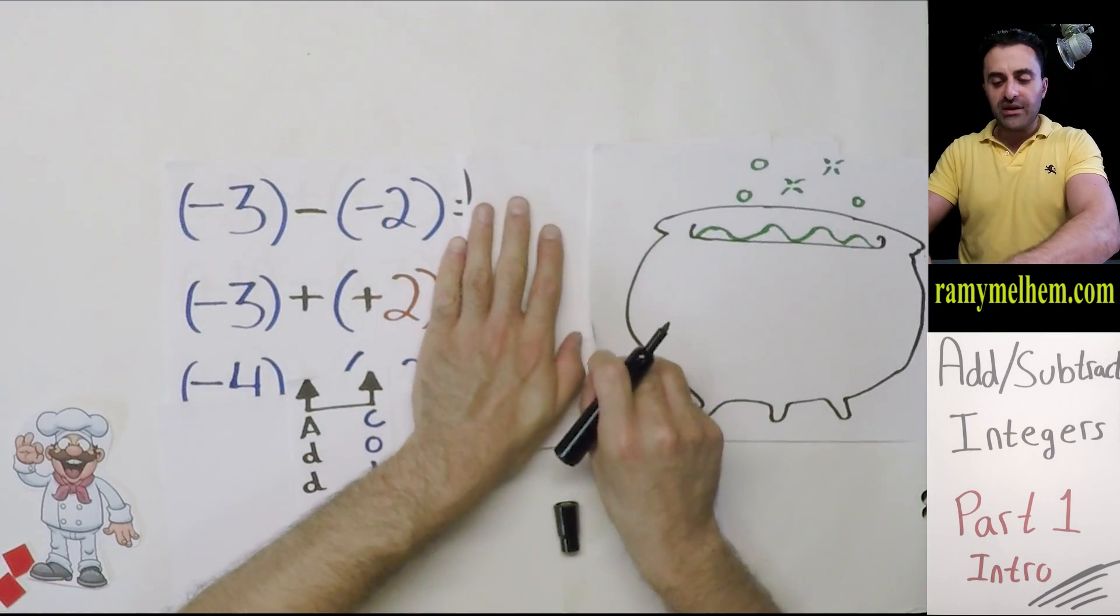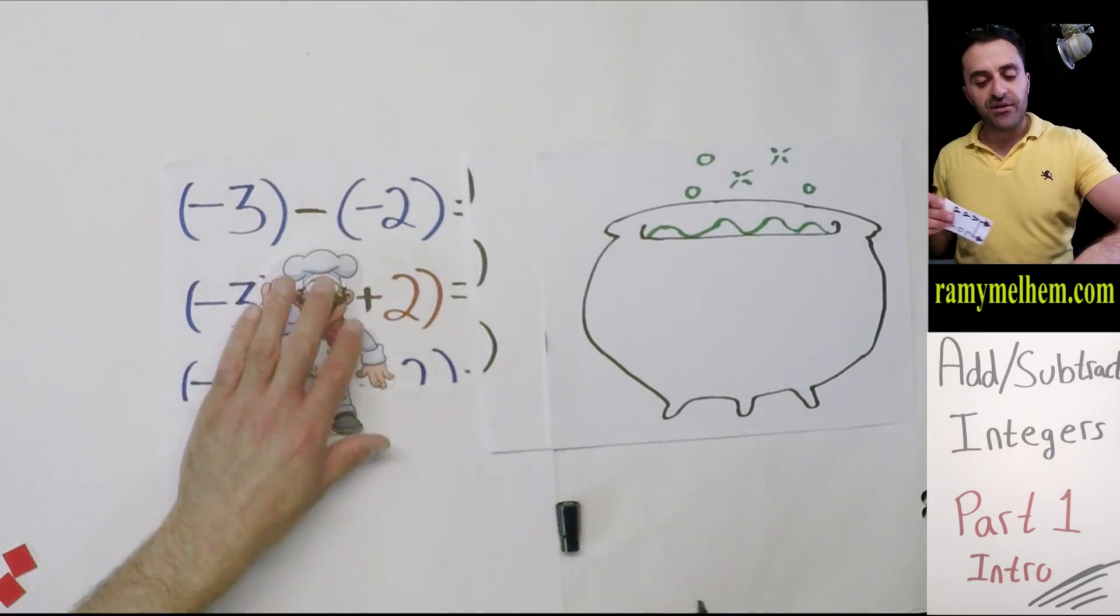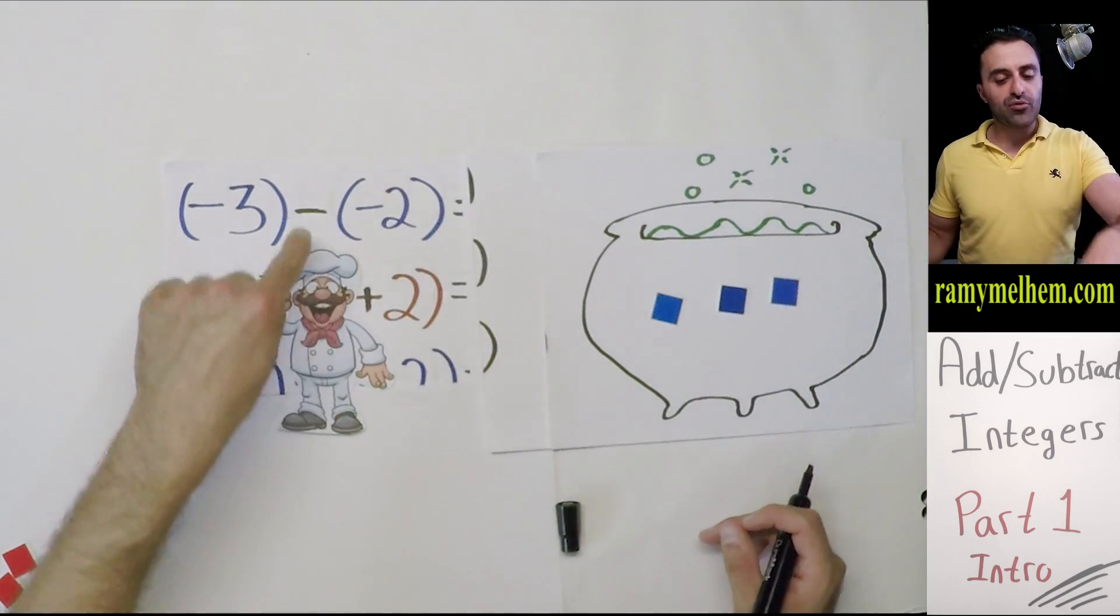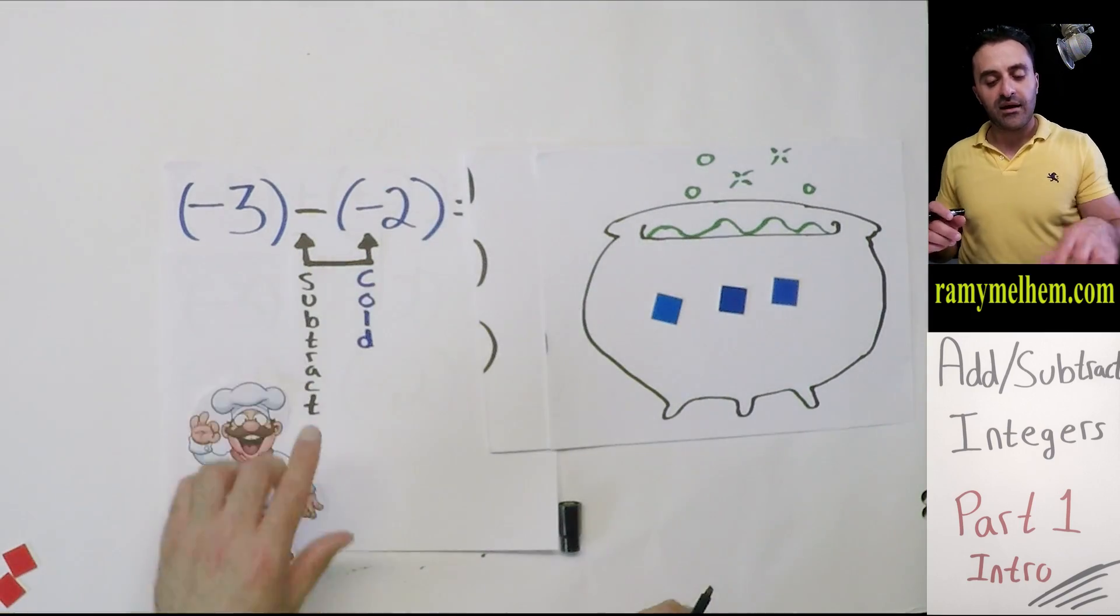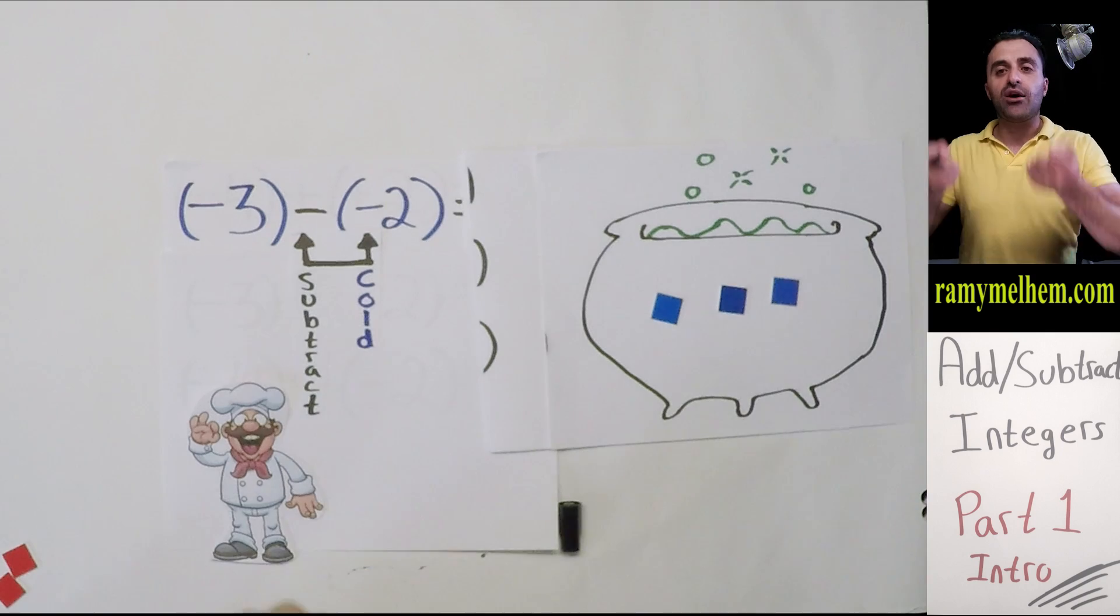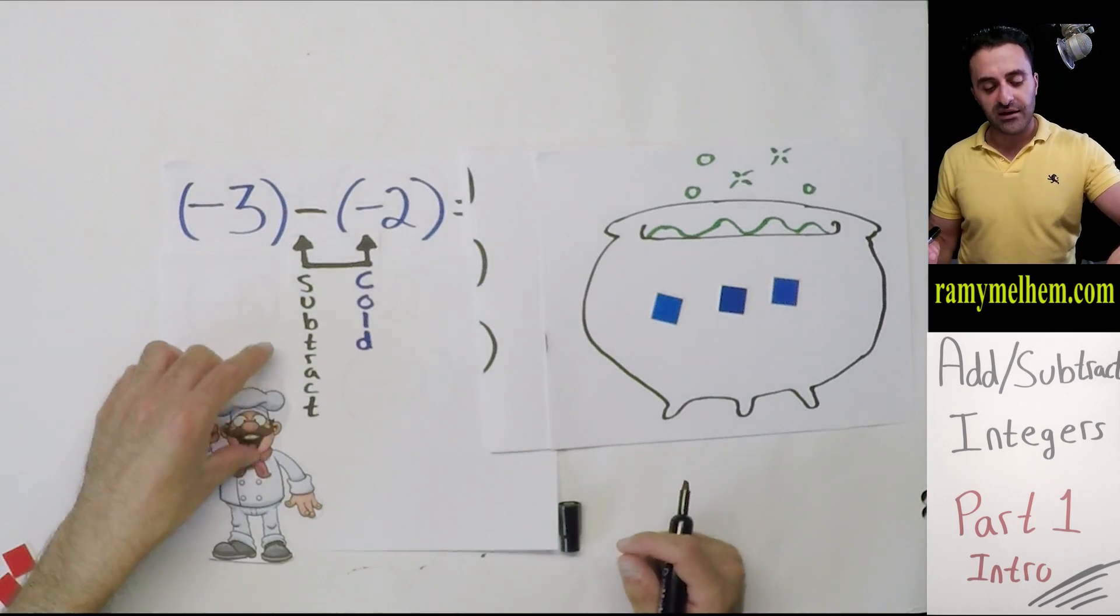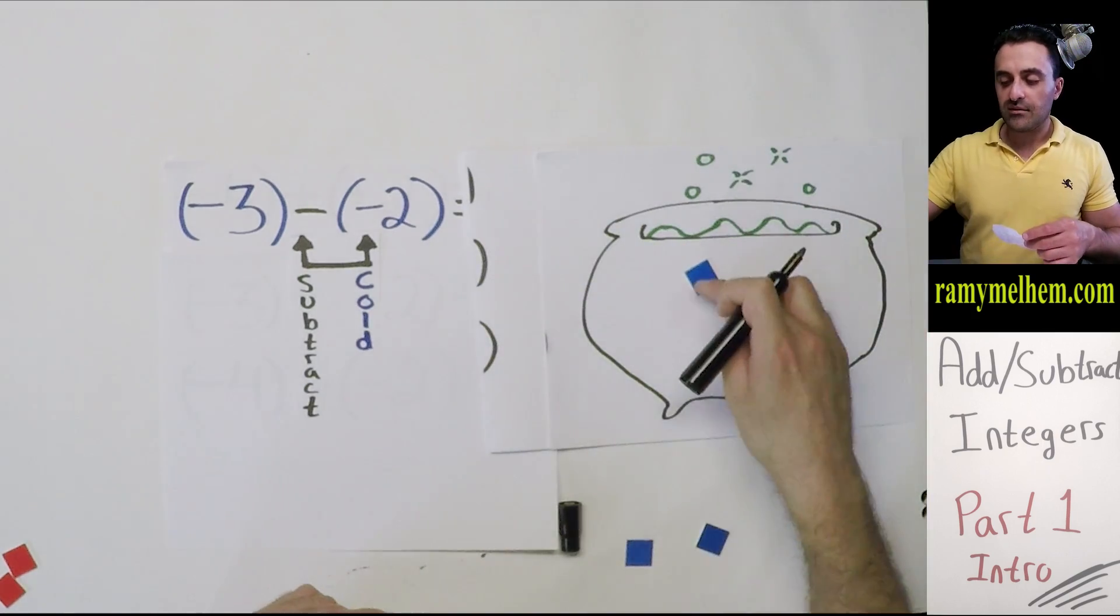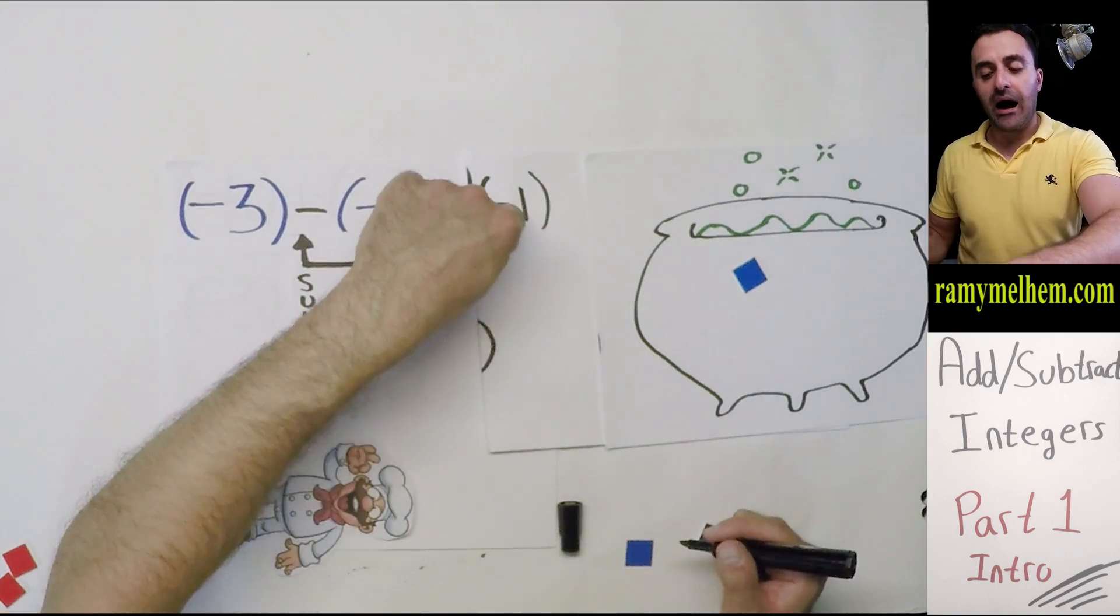We start with negative three. The chef puts three negatives in. But this part says you have to subtract cold ones. If you subtract ice, what happens to the soup's temperature? It'll get hotter because the ice is being removed. Let's subtract two ice cubes. He grabs two ice cubes and subtracts them. We have one ice cube left, so negative one. The temperature went from negative three up to negative one - it warmed up.